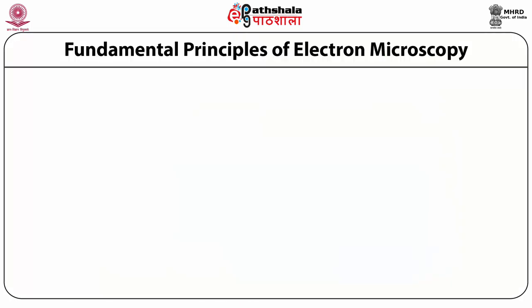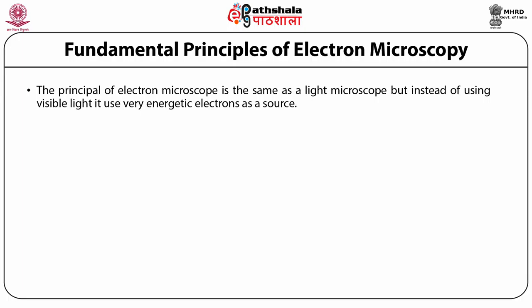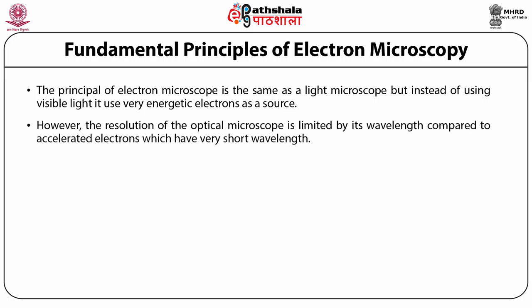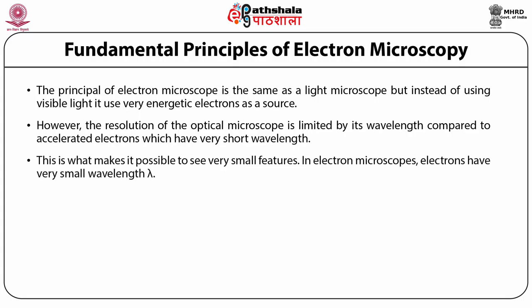Fundamental Principles of Electron Microscopy. The principle of the electron microscope is the same as a light microscope but instead of using visible light, it uses very energetic electrons as a source. However, the resolution of the optical microscope is limited by its wavelength compared to the accelerated electrons which have a very short wavelength. This is what makes it possible to see very small features. In electron microscopes, they have very small wavelength lambda.